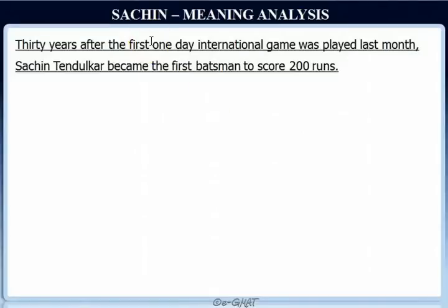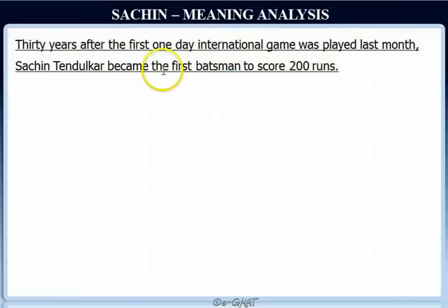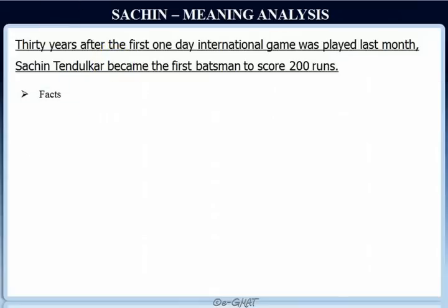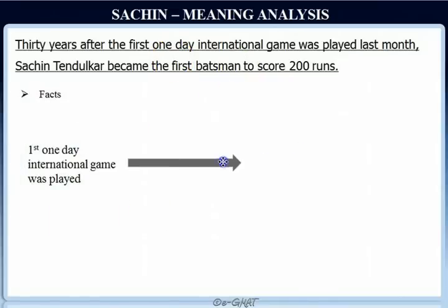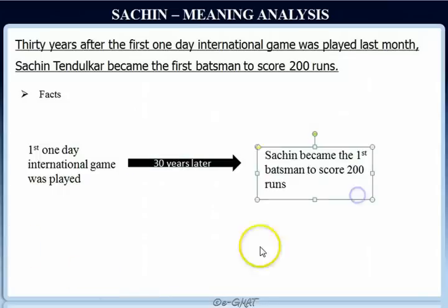The question is on Sachin. Let's first understand the meaning of the sentence: '30 years after the first one-day international game was played last month, Sachin Tendulkar became the first batsman to score 200 runs.' This sentence tells us that the first one-day international game was played on a certain day, and 30 years after that, Sachin became the first batsman to score 200 runs.